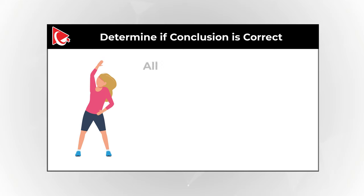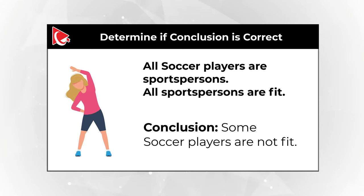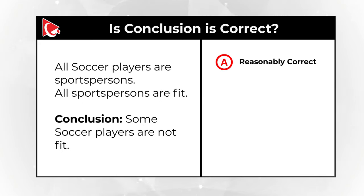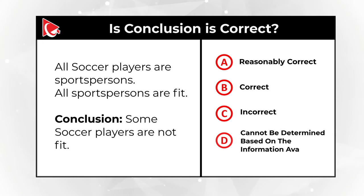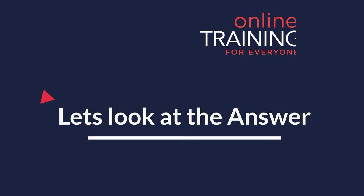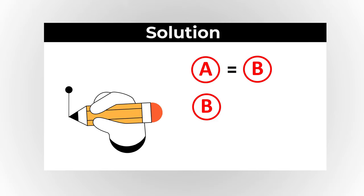Here's a frequently used logic question. Determine if the conclusion is correct based on these statements: 'All soccer players are sports persons' and 'All sports persons are fit.' The conclusion to evaluate is: 'Some soccer players are not fit.' Choices: A) reasonably correct, B) correct, C) incorrect, or D) cannot be determined. Pause the video and take a careful look.